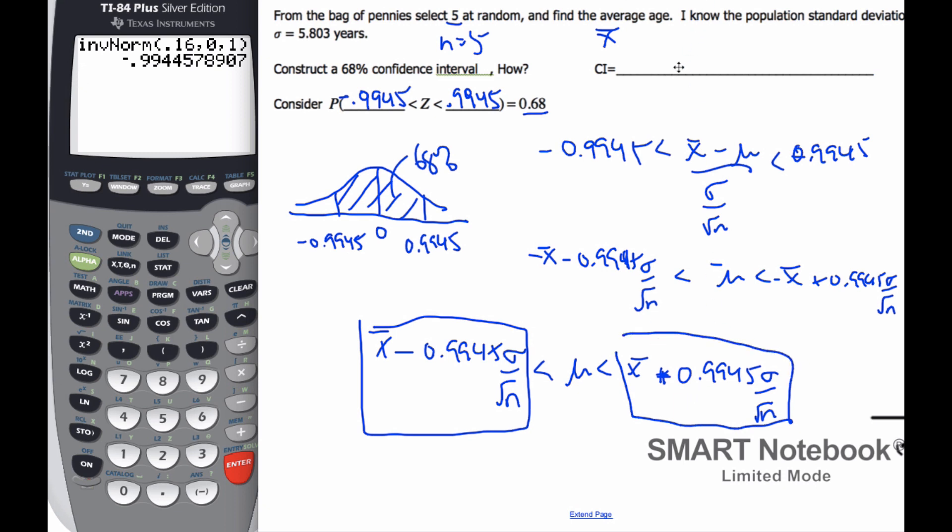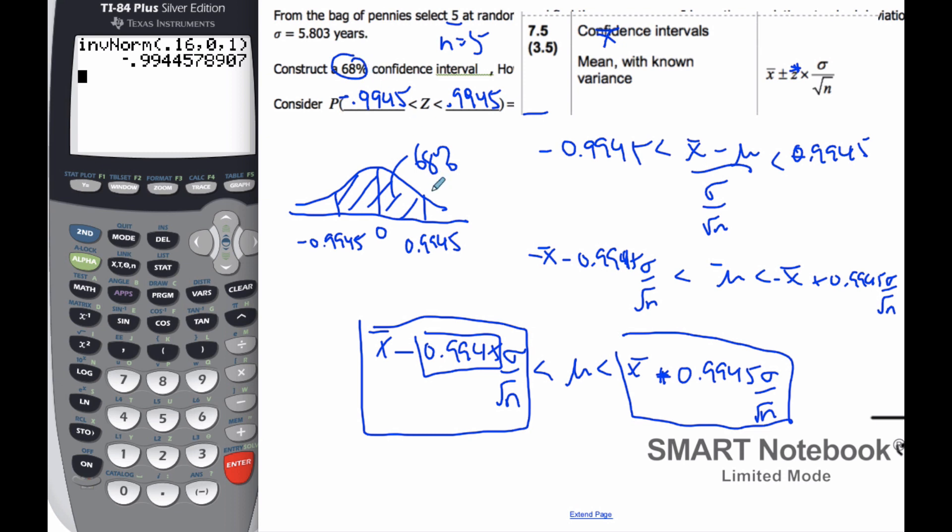And if I look at my formula booklet, what it will say is the mean of the known variance is x bar plus or minus z times sigma over root n. And this here is z, and I usually like to refer to it as z star because it refers to specifically the z for this particular confidence level. And so this value here can change depending upon if I want it to be 68% or 90% or 95%.